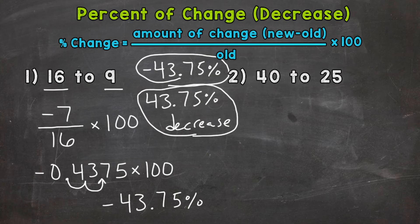Let's move on to number two, where we have 40 to 25. So the first thing we need to do, calculate the amount of change. So the new number, 25, minus the old, 40. So we get negative 15. Divide by the old number of 40, and then we multiply by 100 to convert it to a percent. Remember, always divide by the old number.